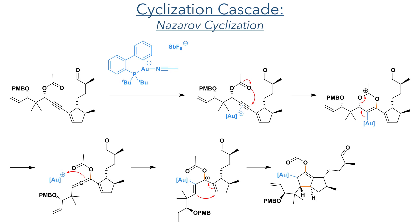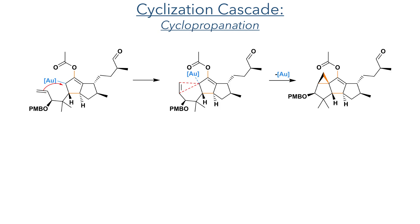It is this allene that is proposed to attack the gold to generate a cation and allow for a Nazarov cyclisation to occur, forming a new carbon-carbon bond together with the migration of one of the carbon-carbon double bonds. The gold carbene that is produced by this reaction is then attacked by the pi bond of the terminal alkene. This is a concerted addition that forms a cyclopropane and eliminates the gold catalyst.